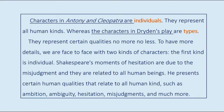We are face to face with two kinds of characters. The first kind is individual. Shakespeare's moments of hesitation are due to misjudgment and they are related to all human beings. He presents certain human qualities that relate to all humankind, such as ambition, ambiguity, hesitation, misjudgments, and much more.